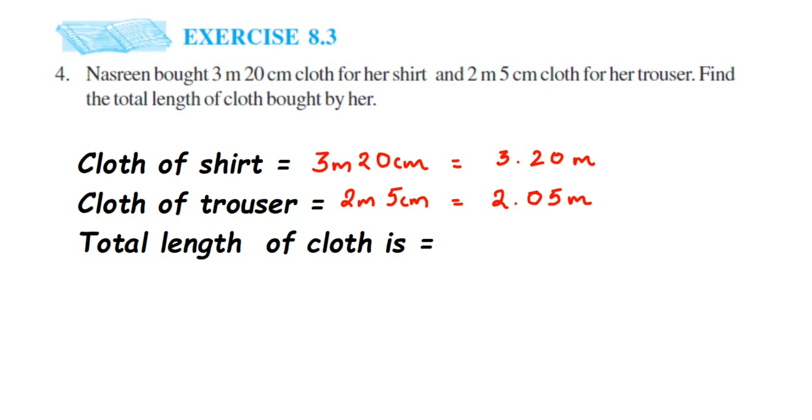Now why we have got 0.05? Because when you convert 5 centimeter into meter, it will be 5 divided by 100, which is nothing but 0.05.